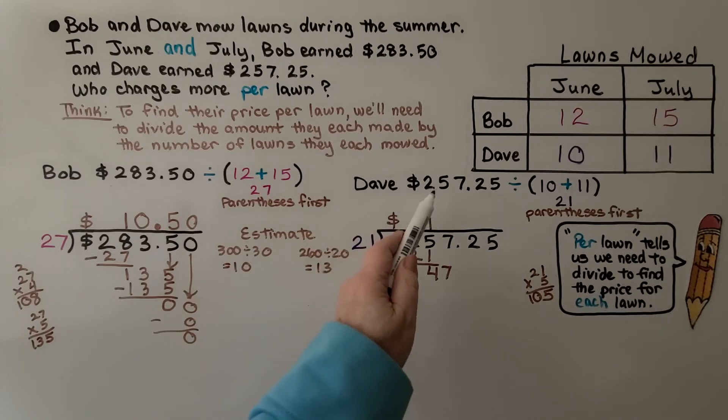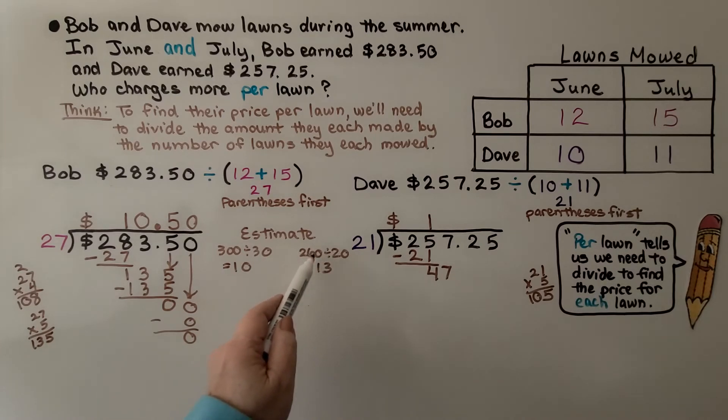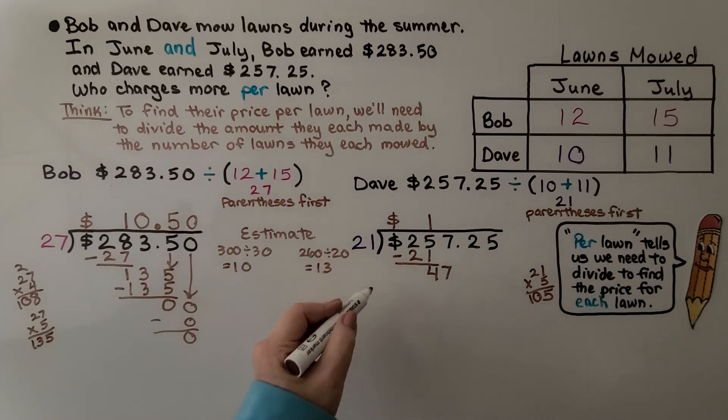Now for Dave, we can estimate this as 260, and the 21 is a 20, and 260 divided by 20 is 13. So just from estimating, we can tell who charged more. It was Dave. But let's find out exactly how much Dave charged. I began the long division already.